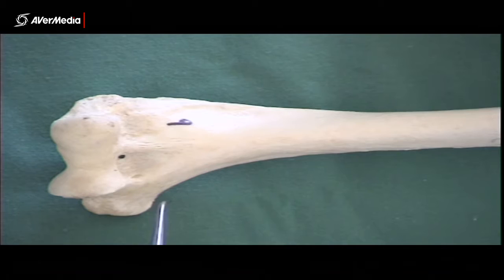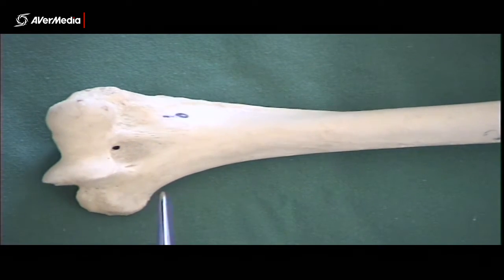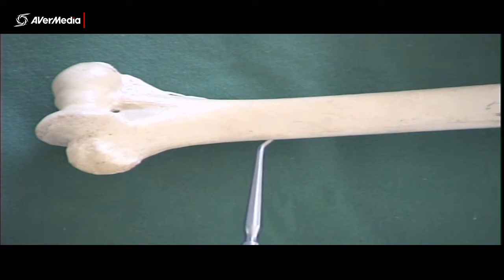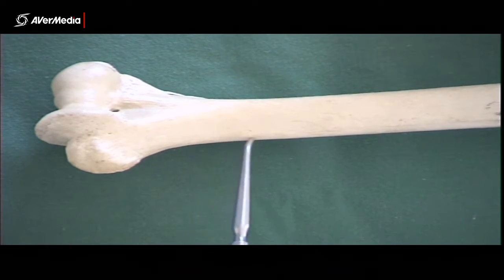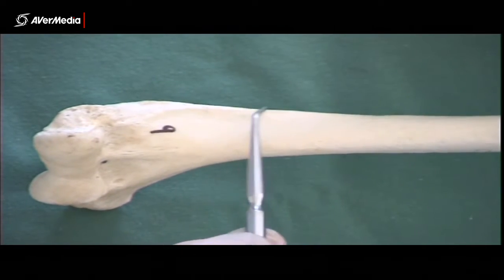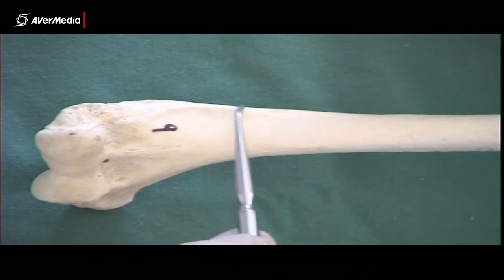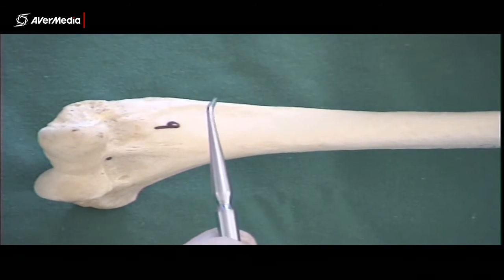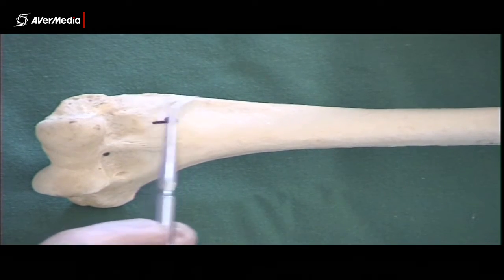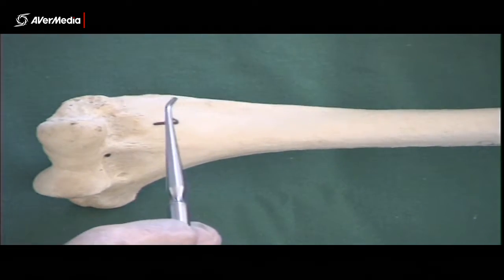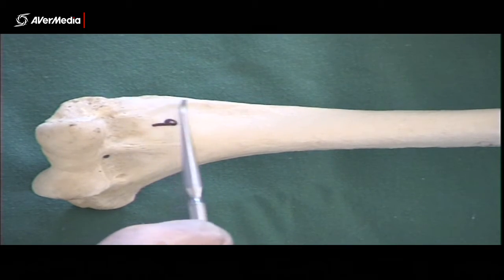Now either side and just proximal to the epicondyles, we have a ridge. So here's a medial supracondylar ridge and on the lateral side it's a bit more pronounced, a bit easier to spot. Now there's the lateral supracondylar ridge, which is an important muscle attachment point. So a couple of the most proximally attaching extensor muscles, brachioradialis and extensor carpi radialis longus, will be attaching in here.